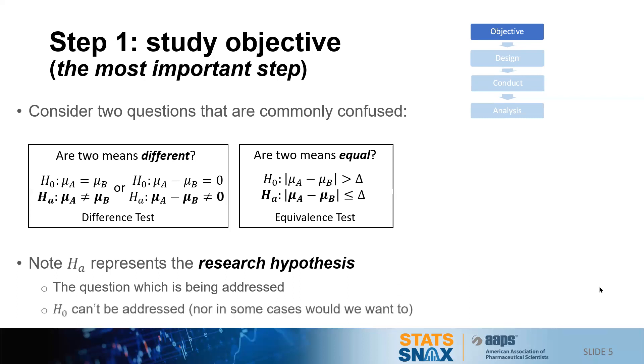Now note, the alternative hypothesis is what's commonly called the research hypothesis. It's the question that we're trying to address. In the first case, we're trying to address whether the means are different, and in the second case, whether the means are equal. I know further that the null hypothesis cannot be addressed in this fashion or in a statistical manner here, nor in some cases would we want to. Consider the case where we're looking to see whether μA minus μB is equal to zero. We can never prove that it's exactly equal to zero.